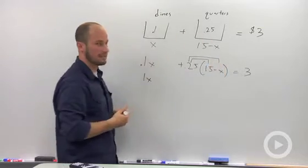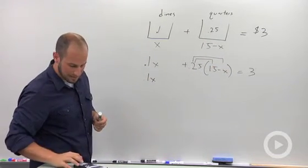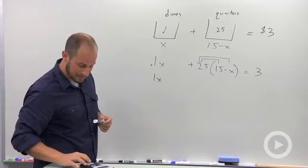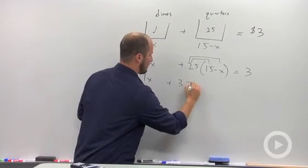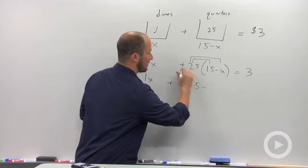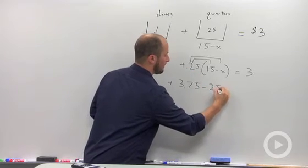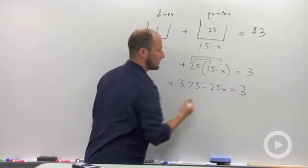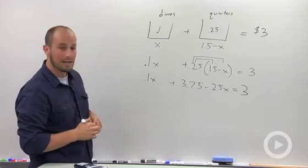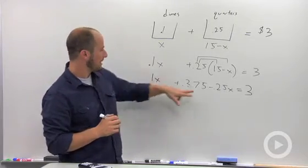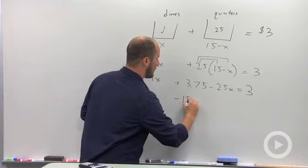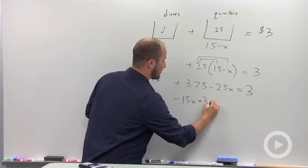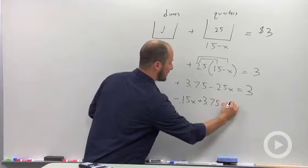I'm going to distribute this 0.25 in. Just to make sure I don't do my math wrong, 0.25 times 15 is 3.75 minus 0.25X equal to 3. Combine like terms, so 0.1X and negative 0.25X... negative 0.15X plus 3.75 is equal to 3.